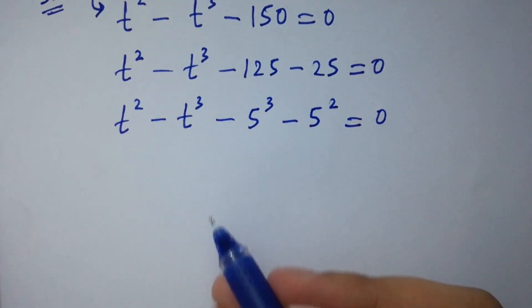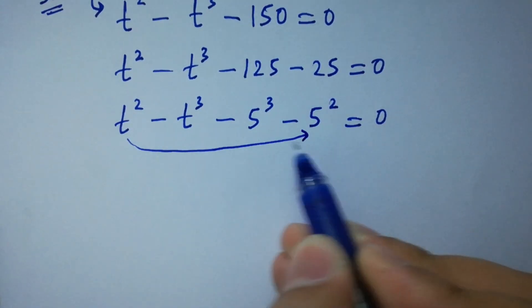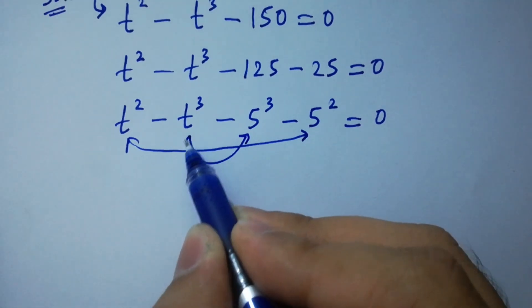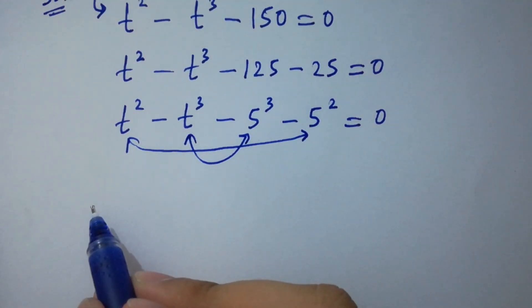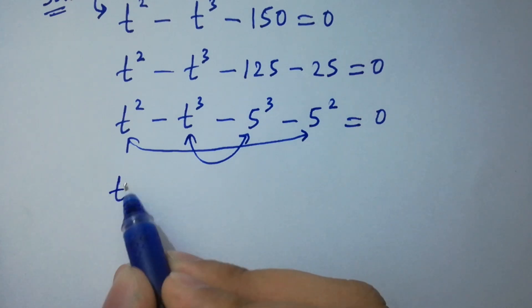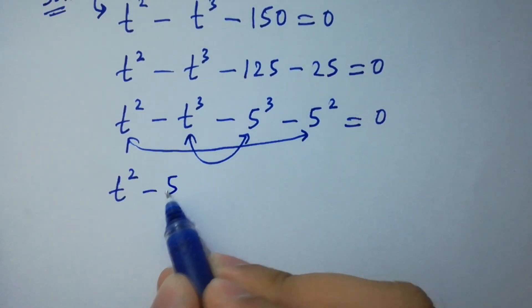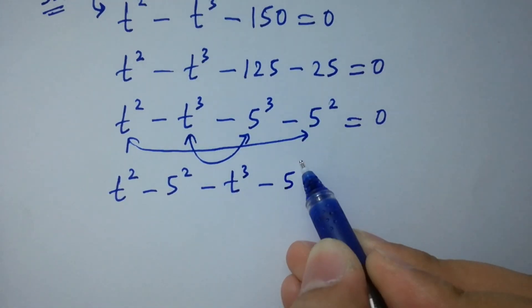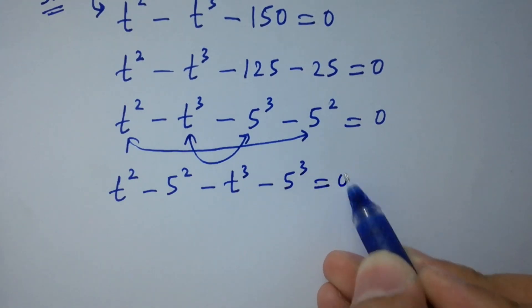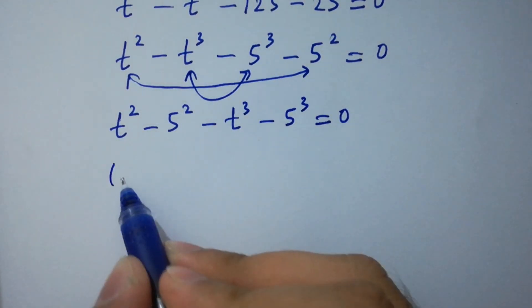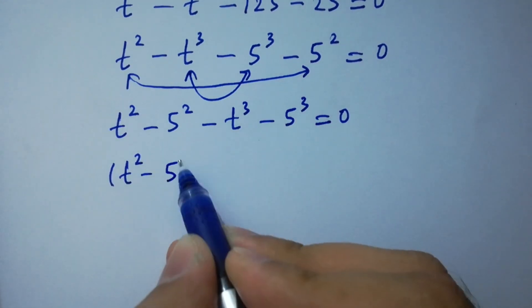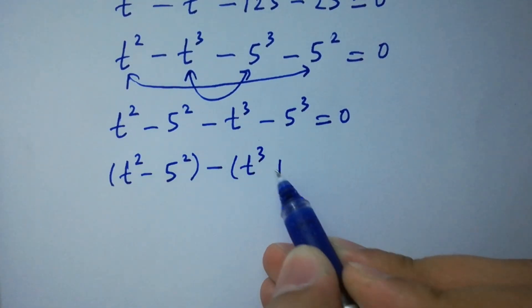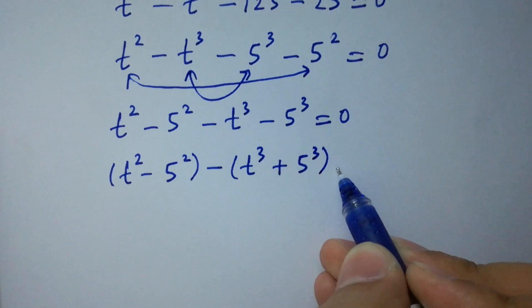You can see here t squared minus 5 squared by corresponding, and here t cubed minus 5 cubed. We can write it as t squared minus 5 squared, minus t cubed minus 5 cubed, equal to 0. Bracketing t squared minus 5 squared and taking common, we have t cubed plus 5 cubed equal to 0.